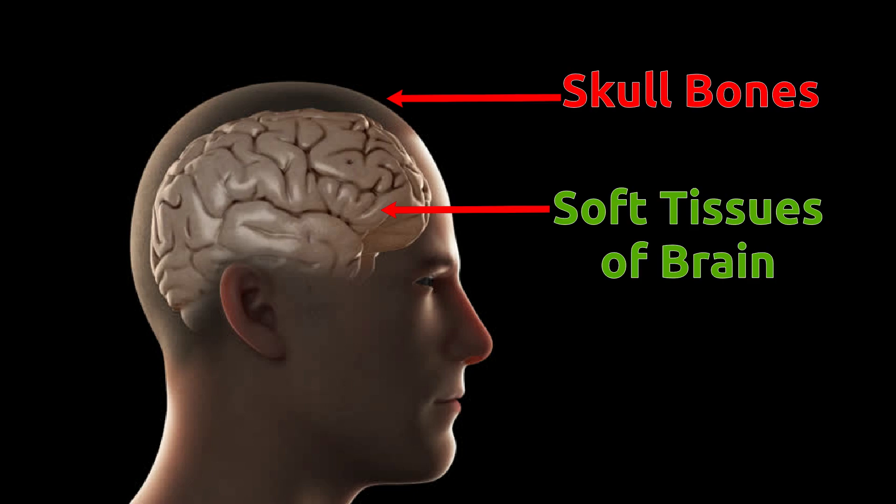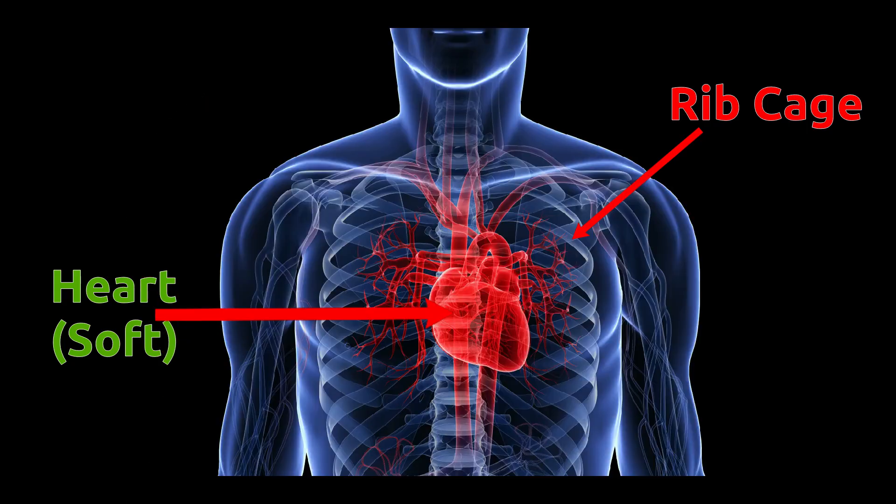2. Protection. Skeleton provides protection to the important internal organs of our body. For example, skull bones protect our brain, which is made of soft tissues. Similarly, the rib cage protects our heart and lungs.